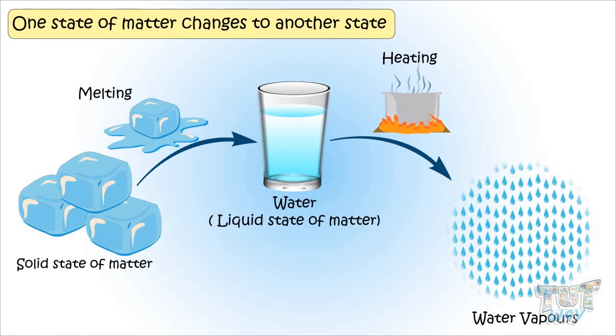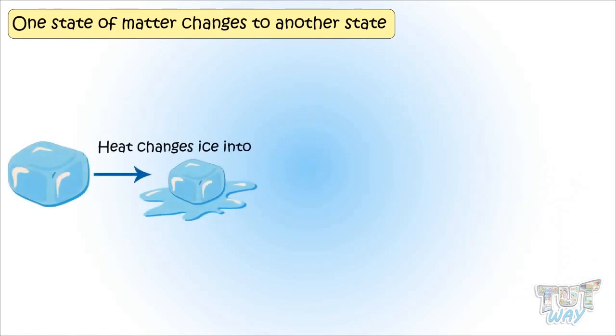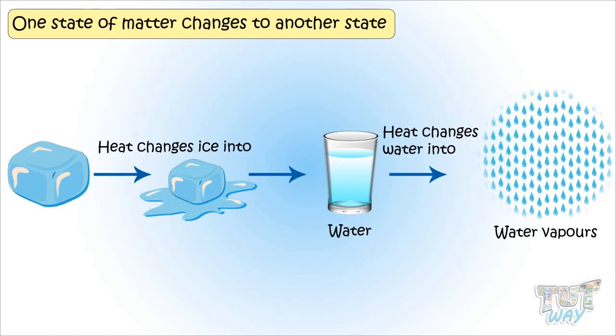So we learned, heating ice changes it to water, that is, solid state to liquid state. And heating water changes water to water vapors, that is, liquid state to gaseous state. You can also convert them back, let's see how.